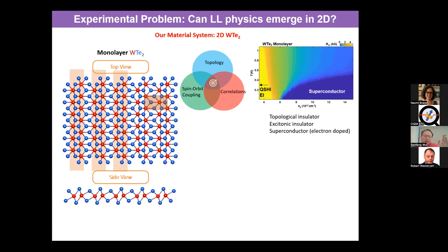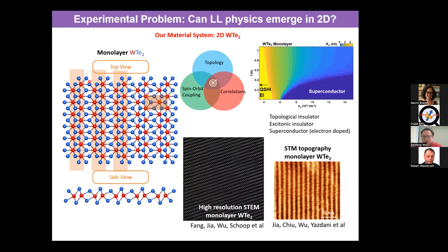If I take images using a real experimental system — for example, what I'm showing on the left is a high-resolution scanning TEM (transmission electron microscope) — if you look at this material under the microscope, you immediately see the zigzag chain of the W atoms as bright spots. It's one-dimensional. On the right is the STM topography of the monolayer that we measured. So you immediately see the 1D lines. There's a very anisotropic crystal already in the monolayer.